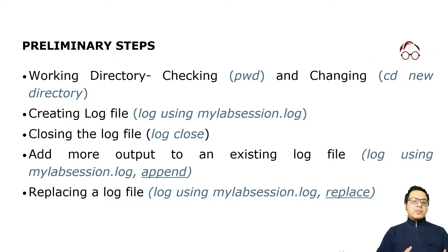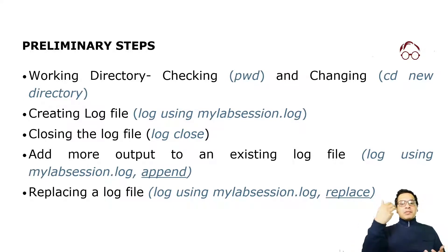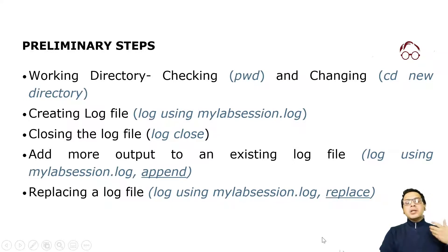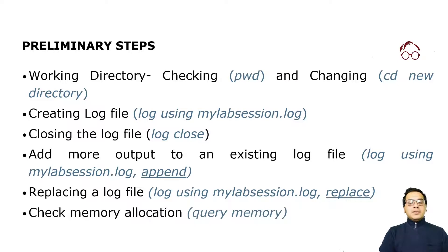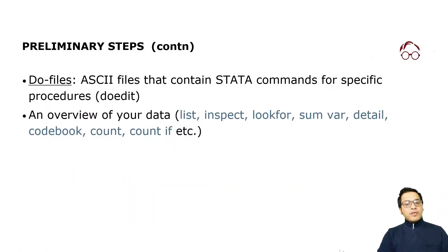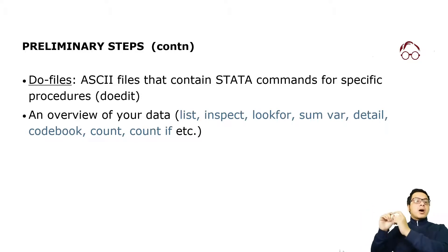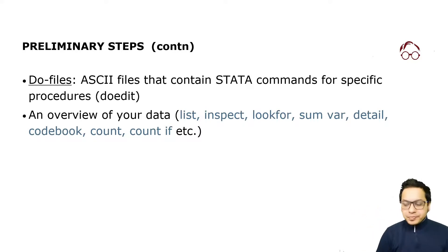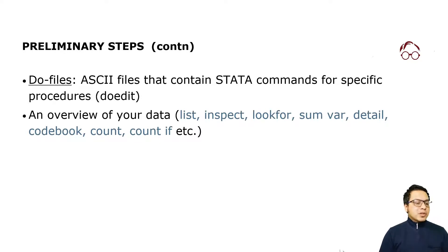Log files save all the outputs from your Stata session — all the commands you run and all the outputs generated can be saved in a log file. To do that, first you have to start a log file, and when you are done with your analysis you have to close it. You can also run 'query memory' to check Stata's memory. In addition to log files, we also use do files — files where we can save our commands and add comments explaining why each command was used.